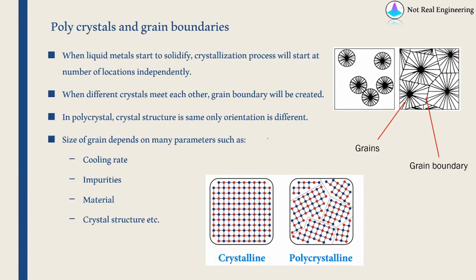All 12 slip systems will not start plastic deformation simultaneously — only the slip system with the most resolved shear will start slipping. What we discussed so far is true only for a single crystal. In reality, all metals have small grains inside. When a liquid metal is cooled, crystallization starts at different locations independently, those crystals grow, and when they meet, a grain boundary forms. The crystal structure is the same in each grain, but they are oriented at different angles — and because of that, a boundary is generated between them, known as a grain boundary.